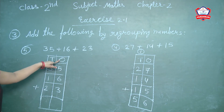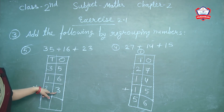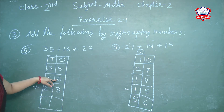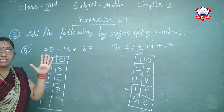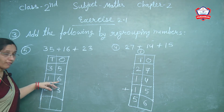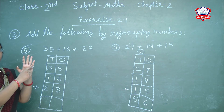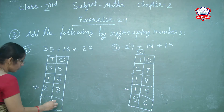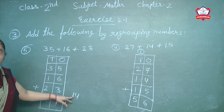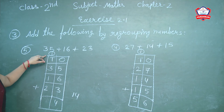First start the ones column. First digit is 5, next is 6, next is 3. 5 plus 6 is 11, then 11 plus 3 is 14. So 14 means 4 is ones. Write 4 in ones column. 1 is carry — write carry in tens column.